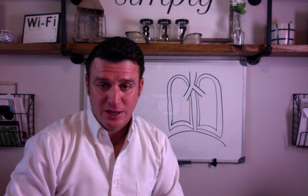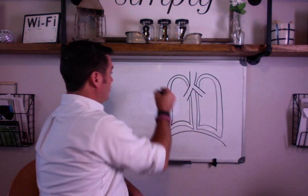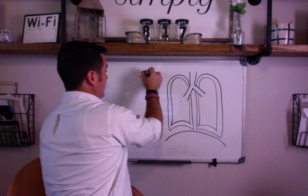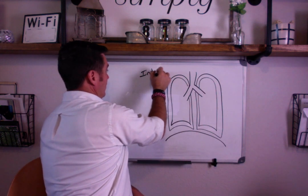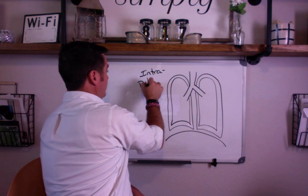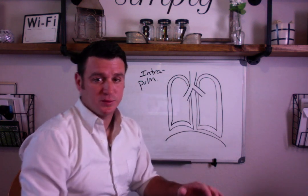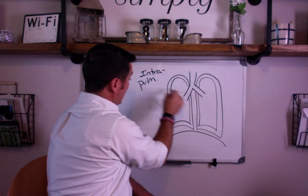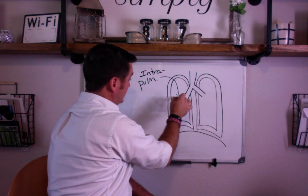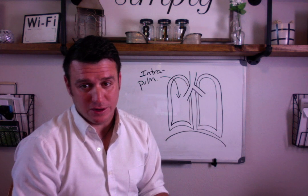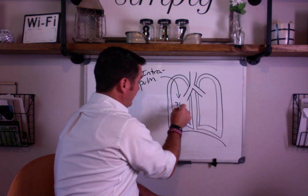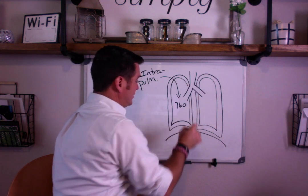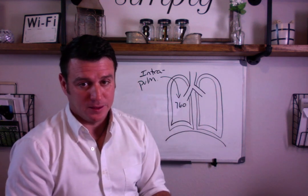The first thing you have to understand is what these words refer to. When you see the word intrapulmonary, we're talking about the pressure inside the lungs — specifically the pressure inside of the alveoli. It is roughly 760 millimeters of mercury.